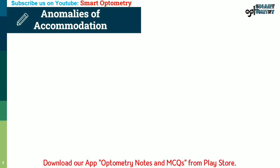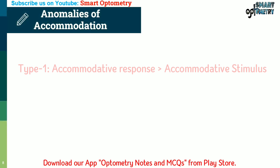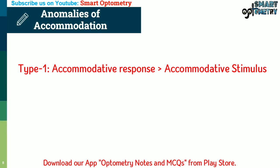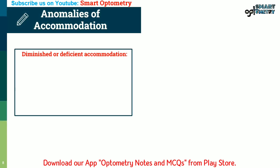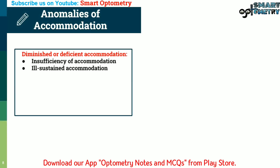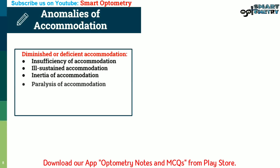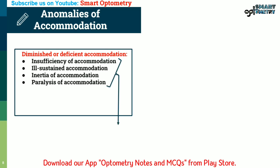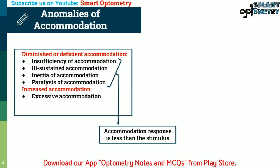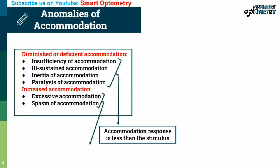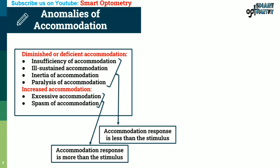Anomalies of accommodation are of two types. In the first type, the accommodative response is less than the accommodative stimulus — this includes diminished accommodation, insufficiency of accommodation, ill-sustained accommodation, inertia of accommodation, and paralysis of accommodation. In the second type, the accommodative response is more than the accommodative stimulus — this includes increased accommodation, excessive accommodation, and spasm of accommodation.